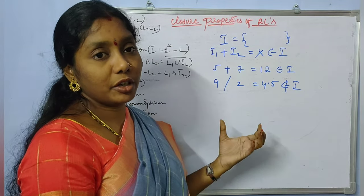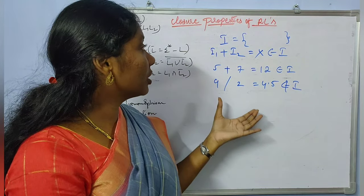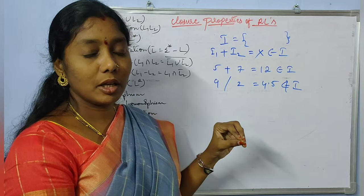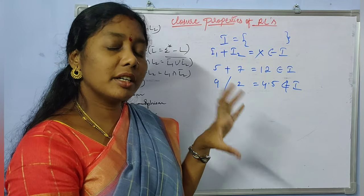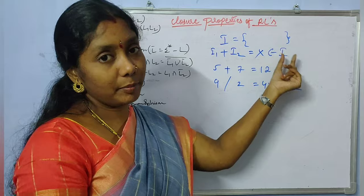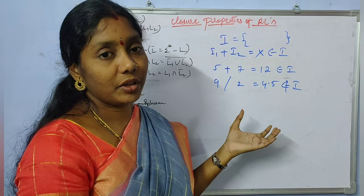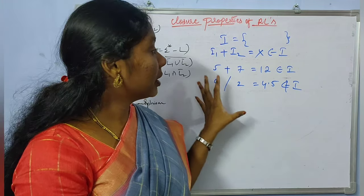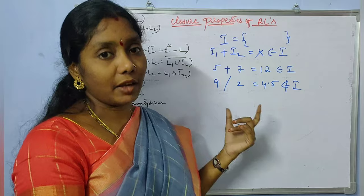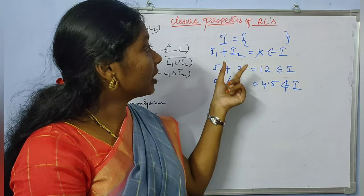So when is a set called closed, and when is it not closed? Closer and closed are synonyms; we can use either term. Whenever you consider two elements from that set and perform some operation on those elements, if the resulted value — whatever the result may be — also belongs to the same set, then we say the set is closed. Otherwise it is not closed.